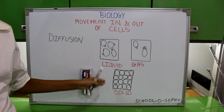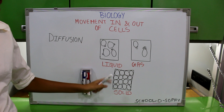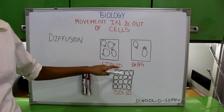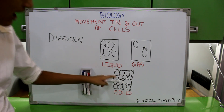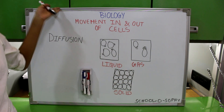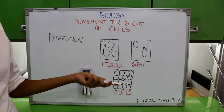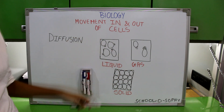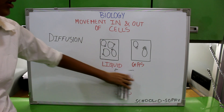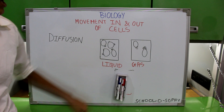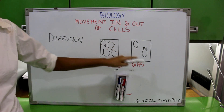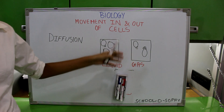Diffusion does not occur in solids because the particles in a solid are so tightly packed that they hardly have any space to move about. Solids like this board, like this pen, cannot change shape until an external force is applied. So diffusion does not occur in solids, while it can occur in liquids and gases because of the amount of space the particles have to move about.